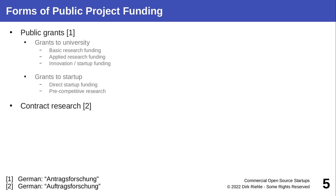Separate from public grants is so-called contract research. The difference is that public grants are something you apply for, while contract research is something you get a contract for and deliver to the client. In public grants, the intellectual property remains with the grantee — the university — while in contract research the sponsor expects to receive all the rights. Public grants work well for startups because the rights stay with the university, and the university can then give the IP rights to the startup. Grants can be split further, aiming at different phases like basic or applied research.